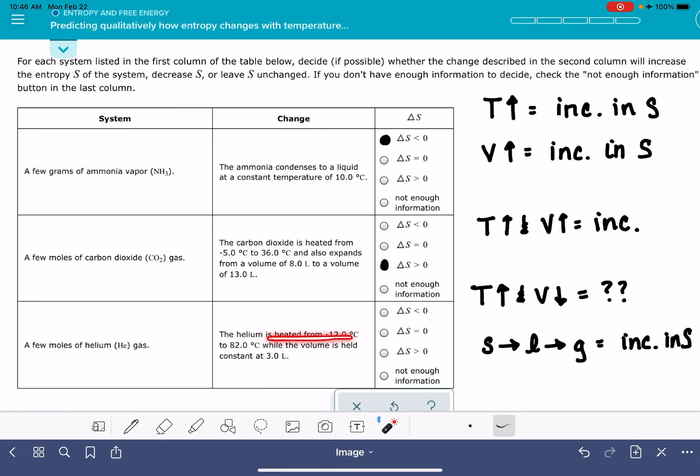And here we have helium that's being heated. So that's a temperature going up. That's an increase. The volume is being held constant. When there's no change to the volume, the volume is not having any impact on entropy at all. So here we're just looking at an increase in temperature. So that means that our entropy increases as well.